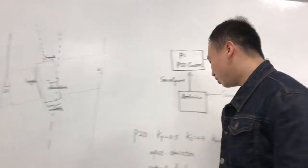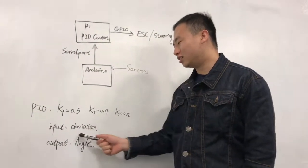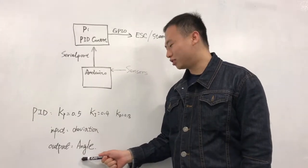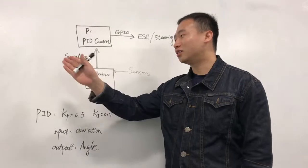We're putting the deviation to a PID control and using the Kp, Ki, Kd to get an output of the angle which is what we're supposed to turn the RC car for steering.